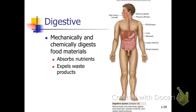The digestive system includes the intestines, stomach, liver, pancreas, gallbladder, and esophagus. We also use the word alimentary canal. This system is responsible for absorbing nutrients, breaking them down, and expelling waste products.